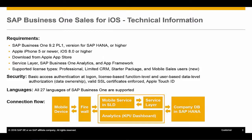It supports the following licence types, which include professional, limited CRM, starter package, and a new mobile user licence specifically tailored for this app only. From a security perspective, it uses basic access authentication at login, licence-based functional level and user-based data level authorisation known as data ownership. Valid SSL certificates are enforced and it also supports Apple Touch ID. It also supports all 27 languages of SAP Business One.